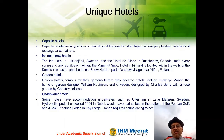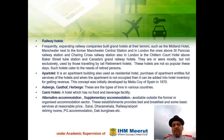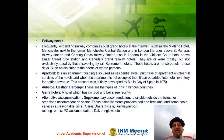Railway Hotels: expanding railway companies frequently built grand hotels at their termini, such as the Midland Hotel Manchester next to the former Manchester Central Station, and hotels above St. Pancras Railway Station and Charing Cross Railway Station in London. Also in London is the Chiltern Court Hotel above Baker Street Tube Station, and Canada's Grand Railway Hotels.